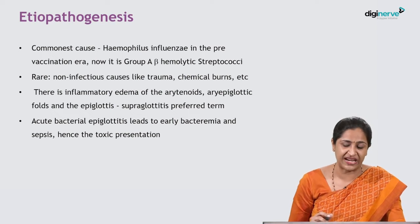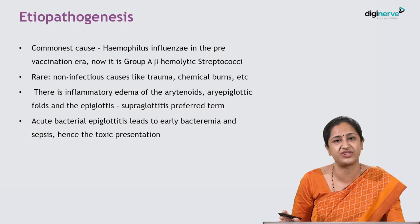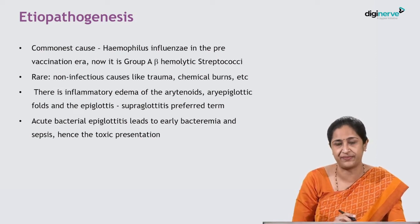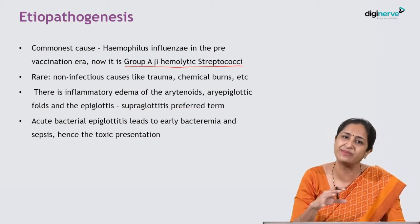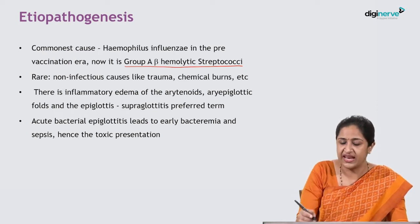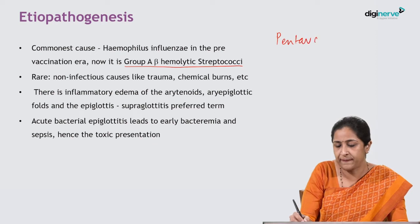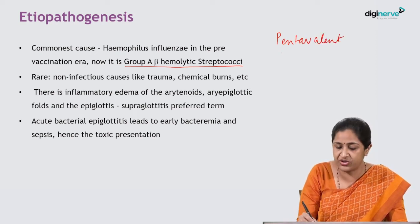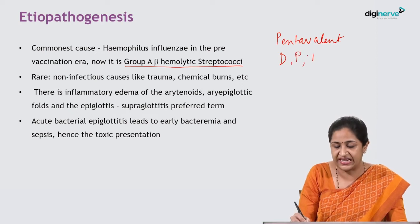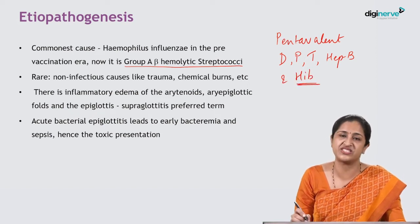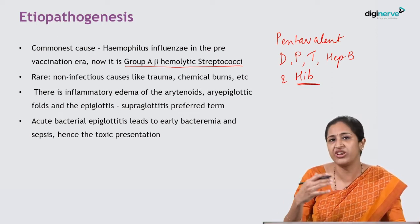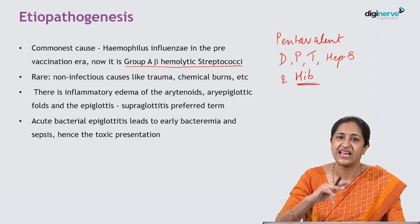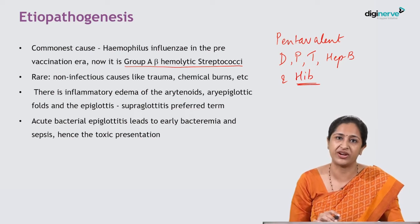The commonest cause of epiglottitis has been Haemophilus influenzae — all textbooks will say this. However, that was the pre-vaccination era. Now, with the pentavalent vaccine covering diphtheria, pertussis, tetanus, hepatitis B and Haemophilus influenzae B, Haemophilus influenzae is slowly reducing and is being replaced by group A beta-haemolytic streptococcus as the more common cause.